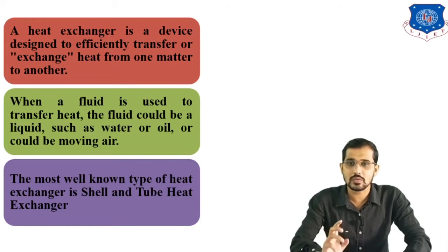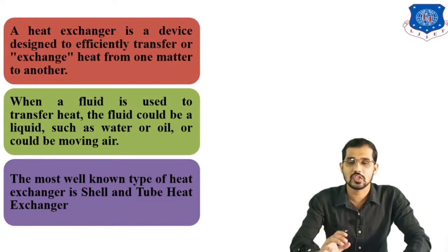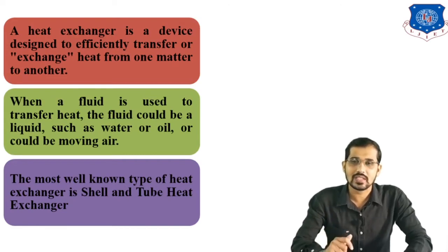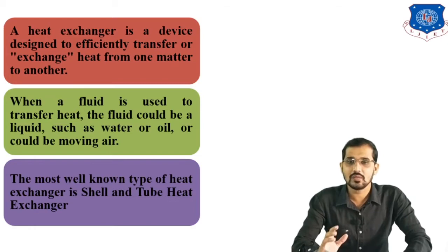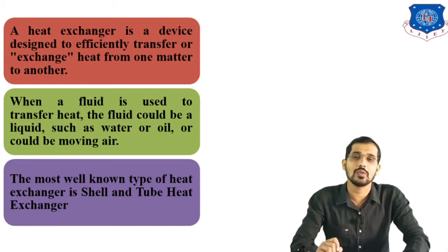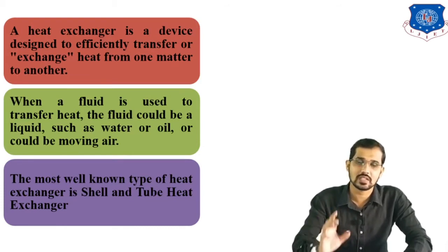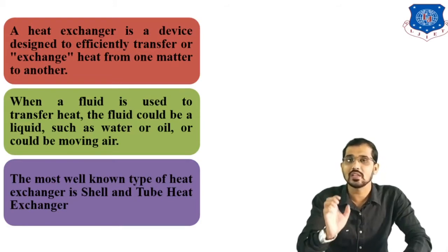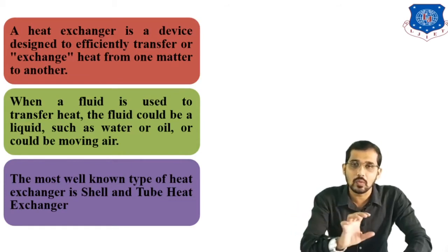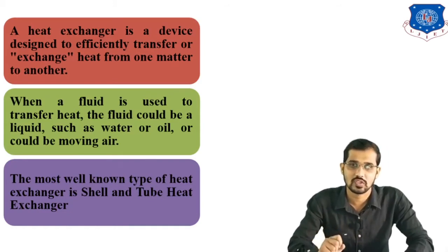When a fluid is used to transfer heat, it could be a liquid such as water or oil, or could be moving air. In a heat exchanger, we can use various fluid streams — liquid, vapour, or air. The most well-known type of heat exchanger used in chemical industries is the shell and tube heat exchanger. In a previous lecture, I discussed the shell and tube heat exchanger in detail, including the significance of baffles, tube side, shell side, and flow patterns such as parallel flow, co-current flow, and cross-current flow.